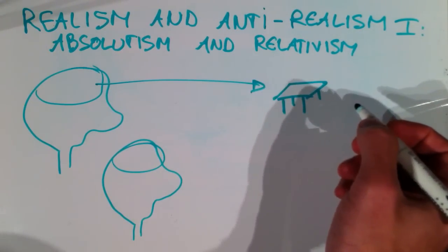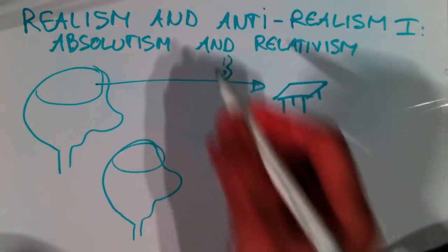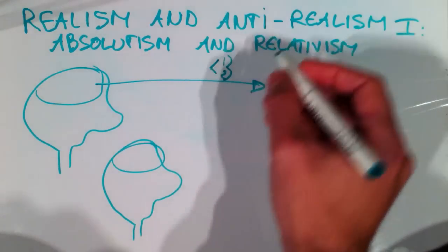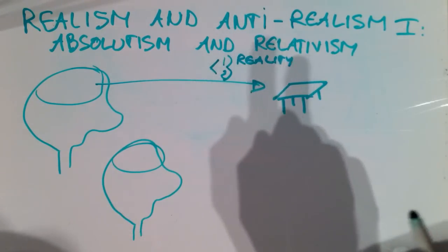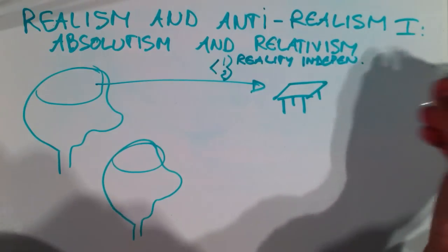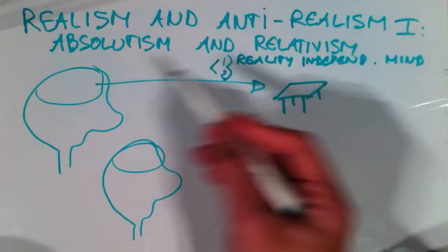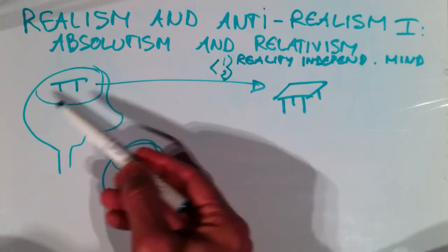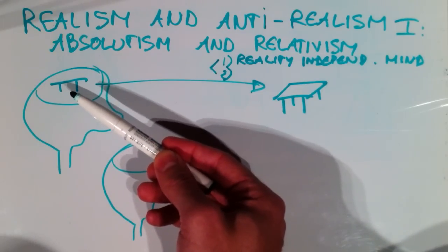What is a realist? A realist, first of all — because there are actually two elements of the definition of realism — the first element is that a realist believes that there is a reality which exists independent of our thinking. And this is important: independent of our mind. This means that when we think about a table, there is more than this table which is in our mind. There is a real table, and we didn't just invent it. It's not just something that our mind created or constructed.